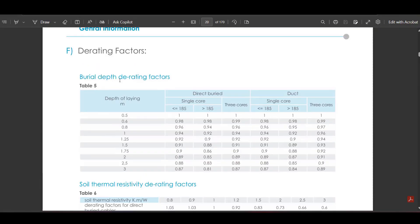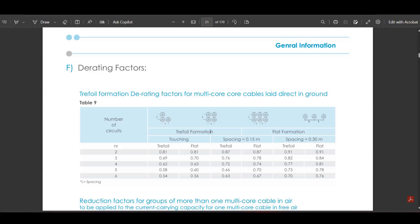Second, derating factor 2, which is burial depth factor. For a burial depth of 80 centimeters, the factor is 0.97. Third, derating factor 3, which is grouping factor. If we lay the cable alongside two other cables with a spacing of 30 centimeters, the factor is 0.84.